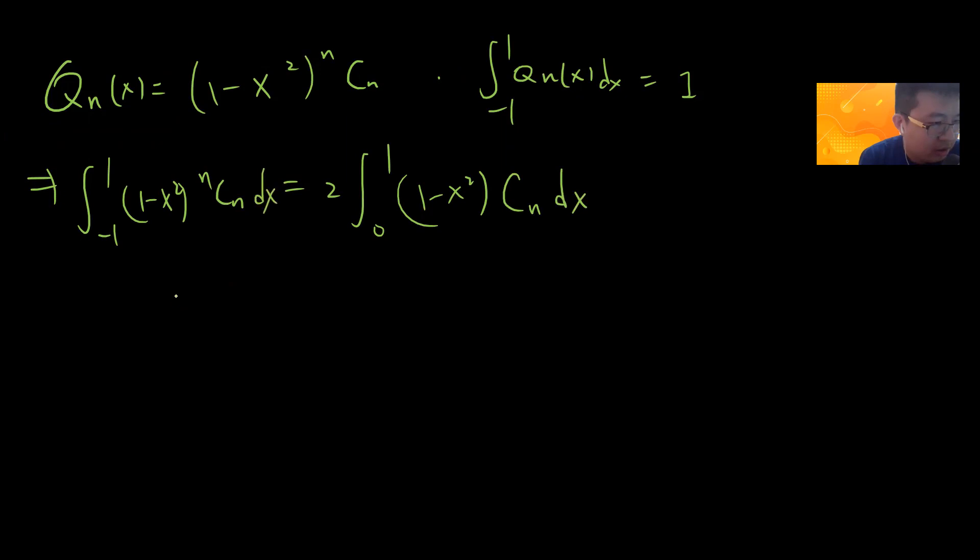So now we can define Q_n(x) to be (1-x²)^n times c_n, and this c_n is chosen to be the normalization. So 1 equals the integral from -1 to 1 of (1-x²)^n c_n dx. This is greater or equal to 2 times the integral from 0 to 1/√n of (1-x²)^n c_n dx. Then we use the Bernoulli inequality: (1+x)^k is greater or equal to 1 + kx if x is greater than 0.